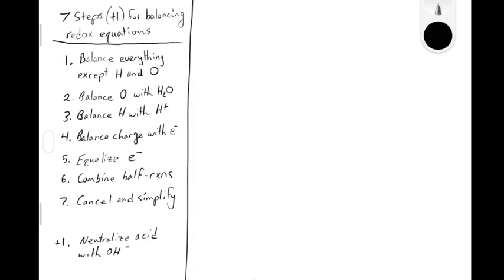When we balance a regular chemical equation, we have to follow the law of conservation of mass, which states that the mass going into a reaction has to equal the mass coming out. The mass of the products is the same as the mass of the reactants. With redox reactions, that's still true, and we have an additional requirement where we have to balance the charge that comes from electrons being transferred from one place to another.